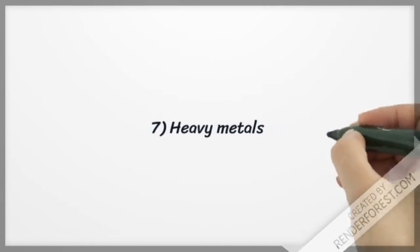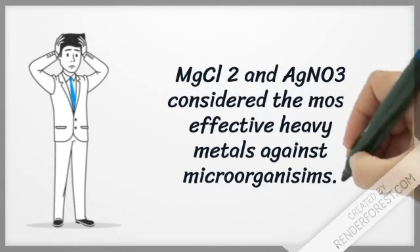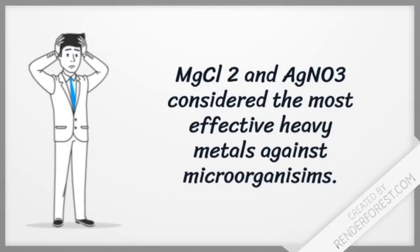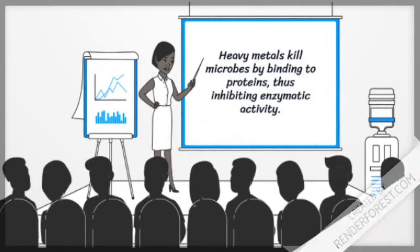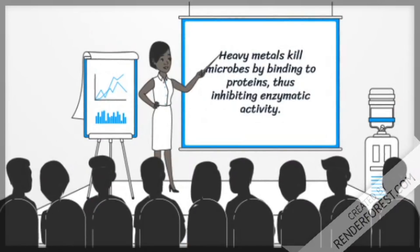Heavy metals. Examples are MgCl2 and AgNO3 and it is considered the most effective against microbes. It binds to protein and stops the activity of enzymes, thus eliminating microbes.